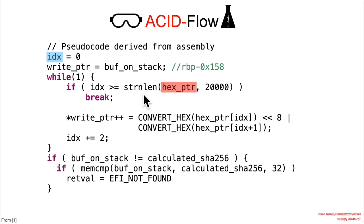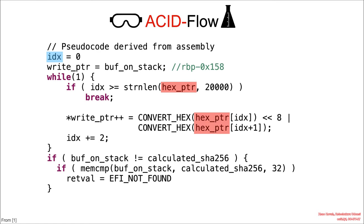That seems a bit big — basically it's saying that it will allow for indices up to 20,000. Down here in this convert_hex function, it's going to be reading from the hex pointer at index starting at zero: index zero shifted up by eight and index one. This is going to convert a hex value like \x90 written in ASCII and convert it to a binary value \x90 written in binary.